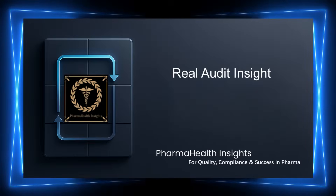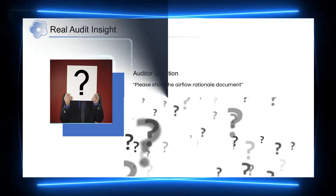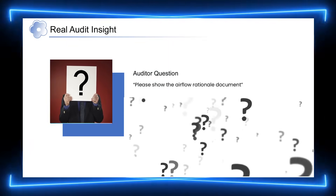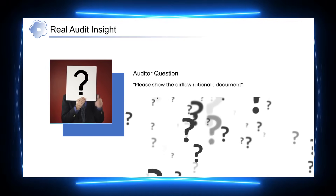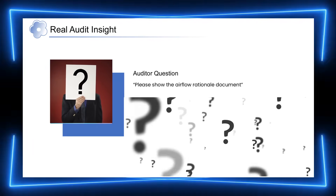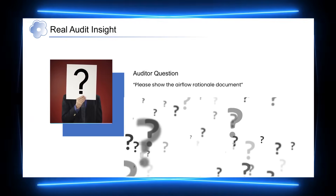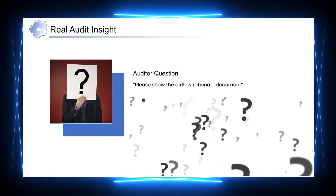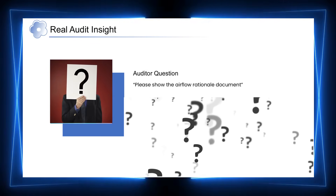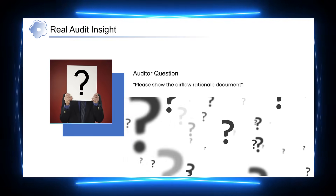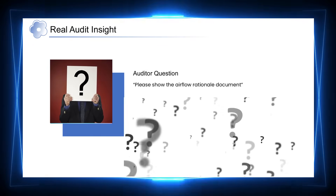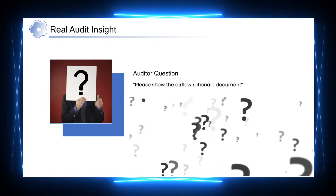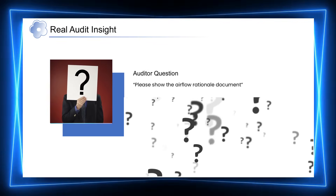Let me share a real audit experience. The system is installed, qualified, and operating smoothly. There are no visible issues in day-to-day operations. Then the auditor asks a simple question: please show me the airflow rationale document. When this document is missing or incomplete, it immediately raises concerns — not because the system is failing, but because the logic behind the design has not been clearly documented. This highlights an important lesson: in GMP, control must not only exist, it must also be clearly explained and justified.